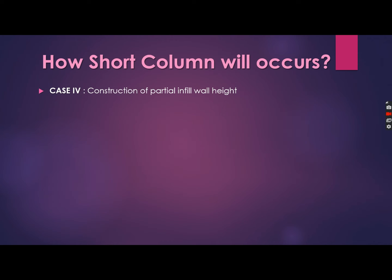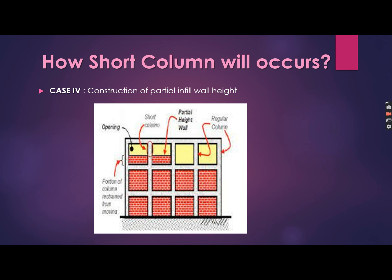Case four: construction of partial infill walls also introduces the short column effect in the building. Consider a three-story building with four bays. In the first and second stories, there is a complete infill masonry wall. However, in the third story, two bays are left empty and two bays are partially filled. Due to these partially filled walls, short columns are formed as shown in the figure, and the short column effect is introduced in the building.